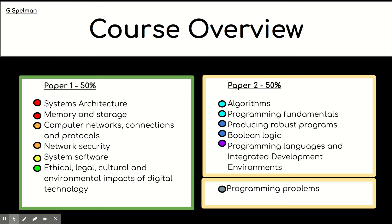So here's an overview of the course. There are two papers to be taken at the end of year 11. The first paper is worth 50% and it is the Computer Systems Theory.